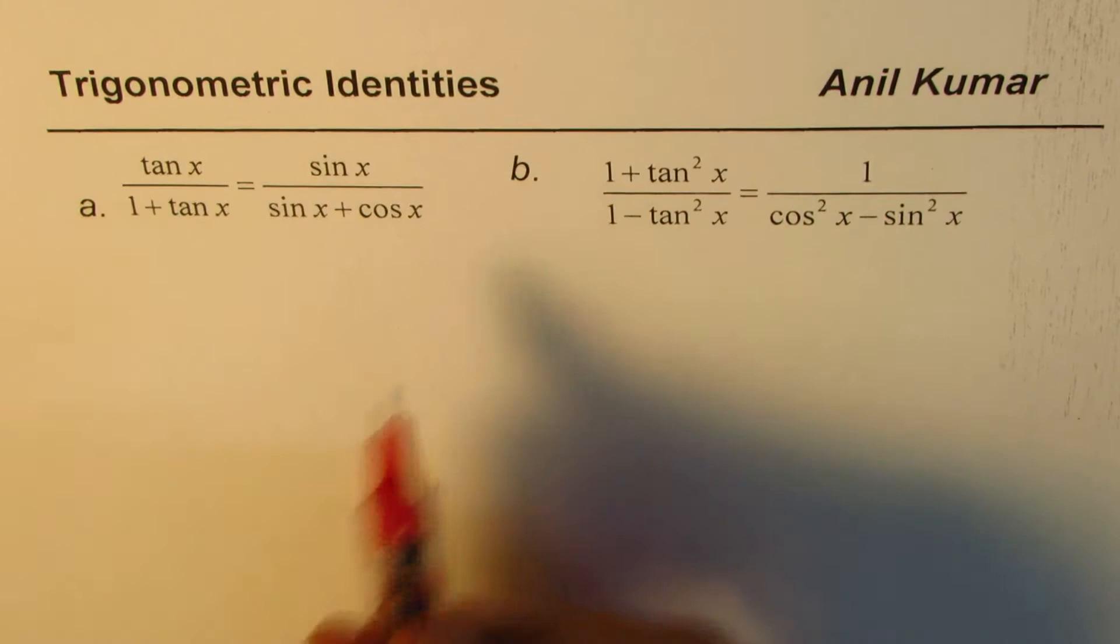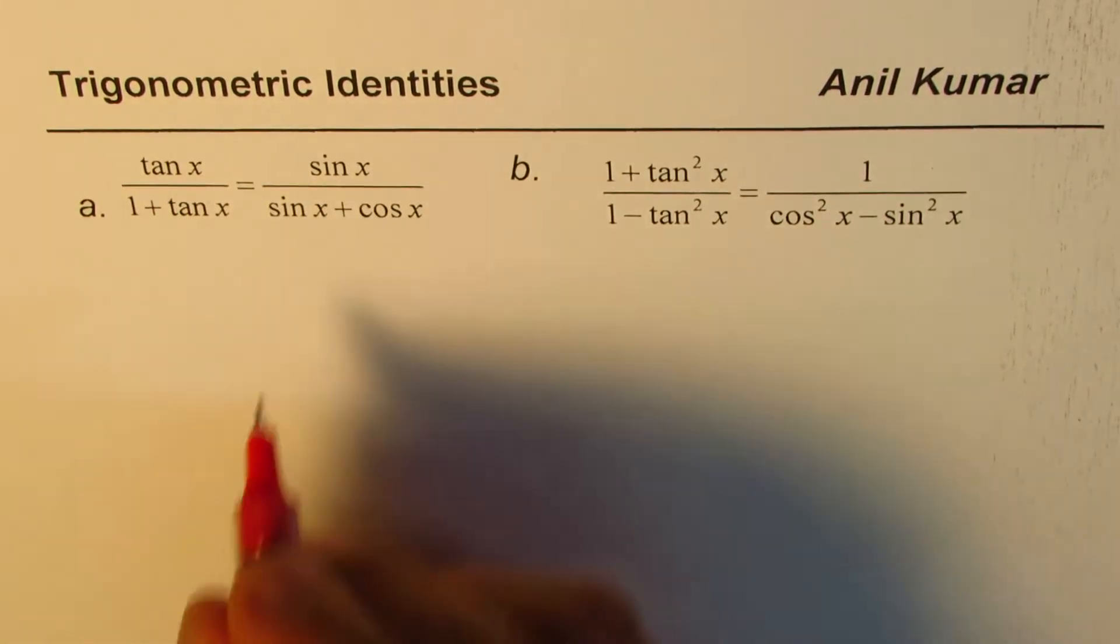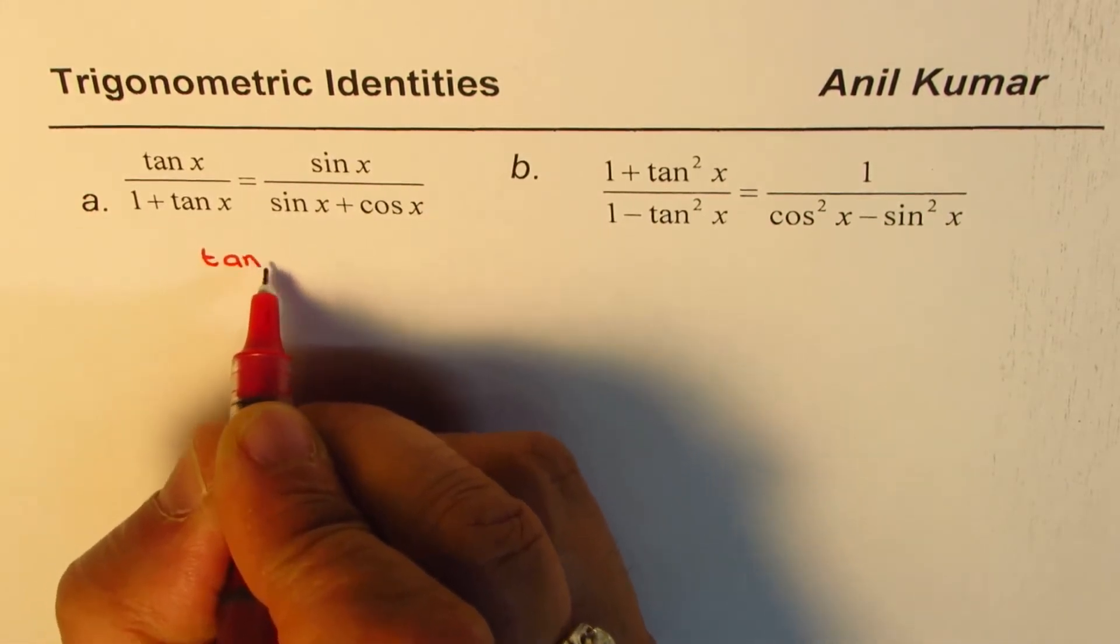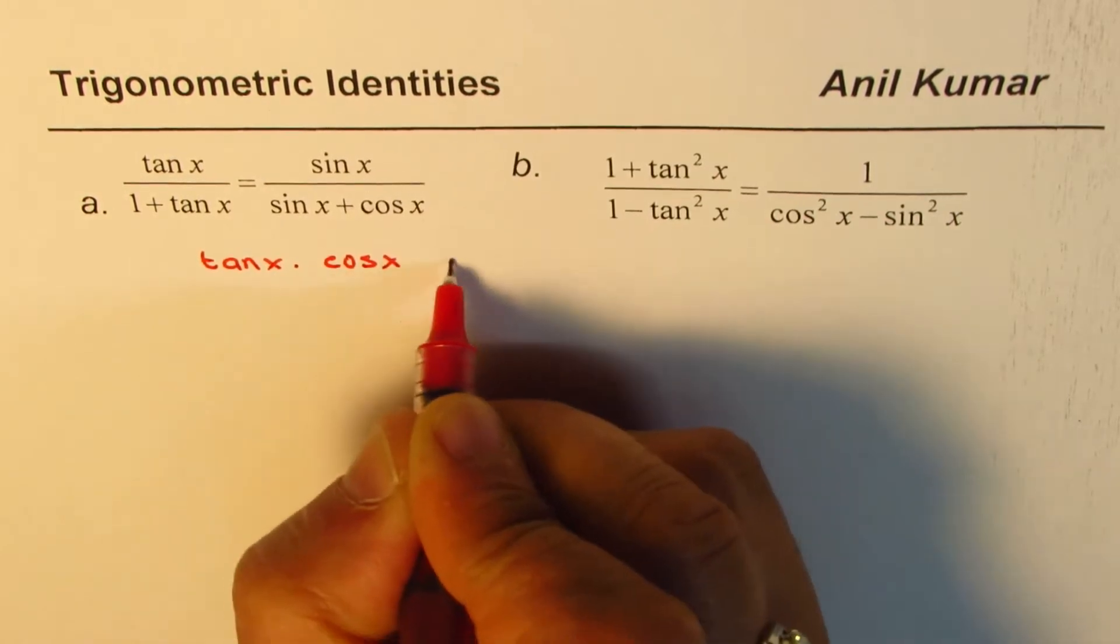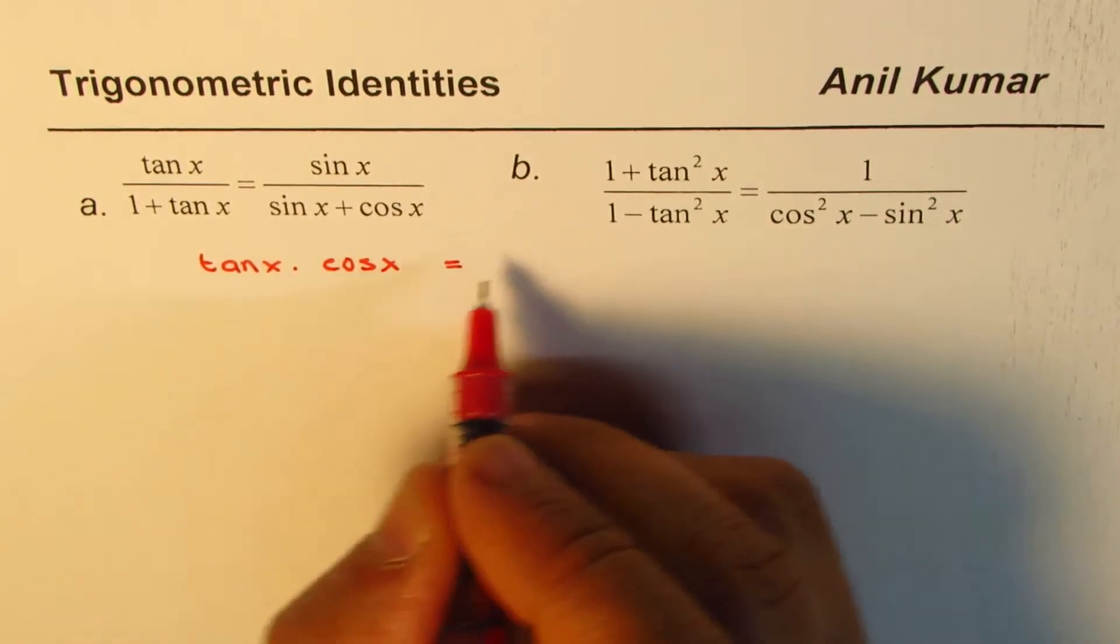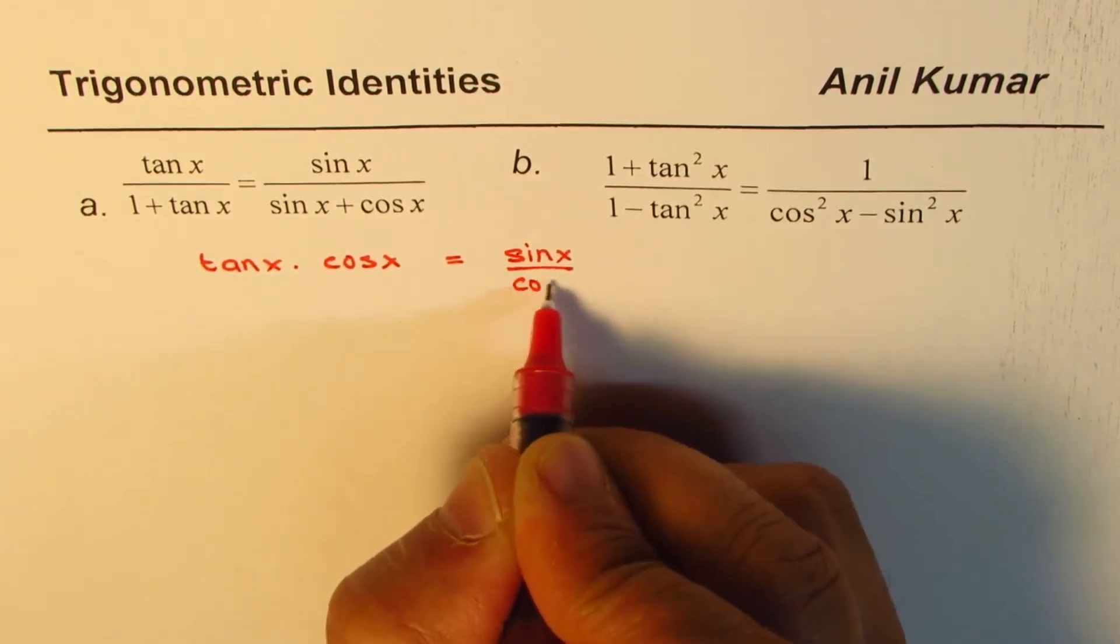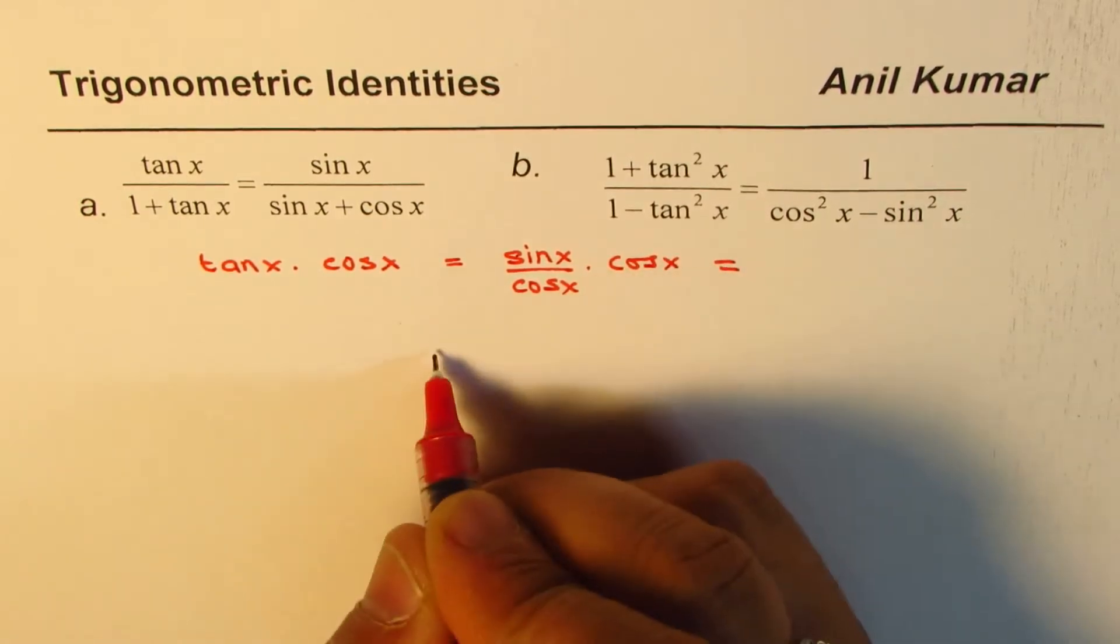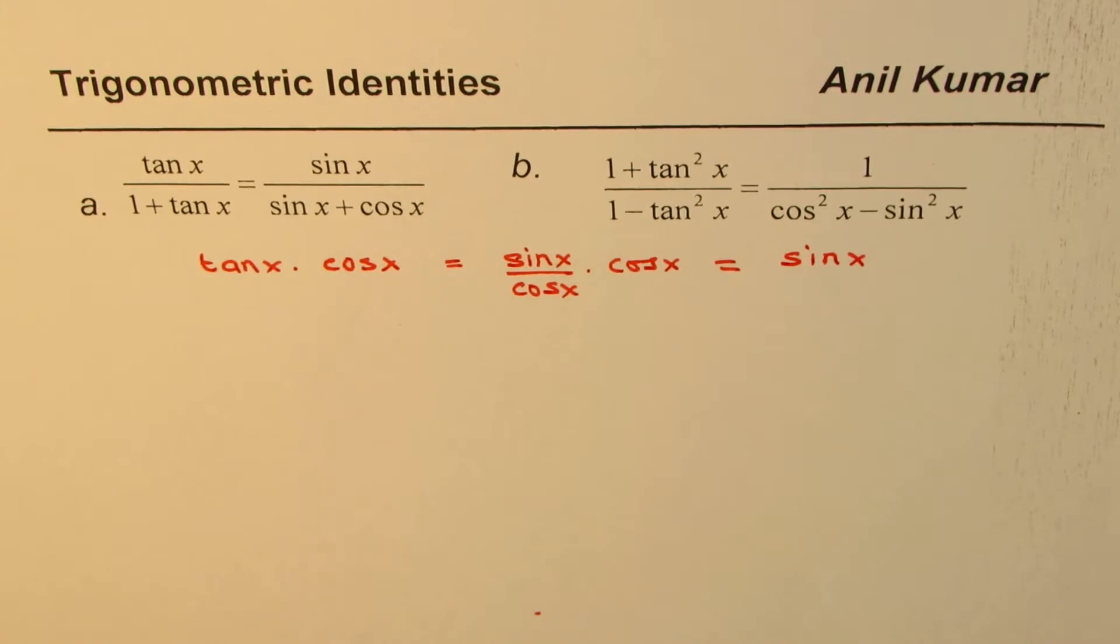Now, the strategy here is to look at tan and sin, how are they related? So, let's try this out. What is tan x times cos x? Well, tan x times cos x, tan is sin, right? Sin x over cos x. And if I multiply that by cos x, what do I get? I just get sin x. Do you see that?